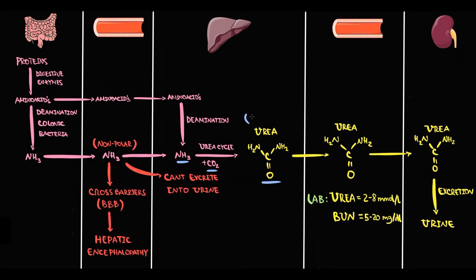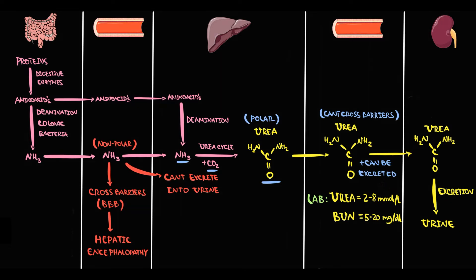Urea is much more polar than ammonia. As a polar substance, it cannot cross through barriers such as the blood-brain barrier. And also, because it is polar, kidneys can excrete urea into the urine. So basically, the liver with one conversion solves two crucial problems.